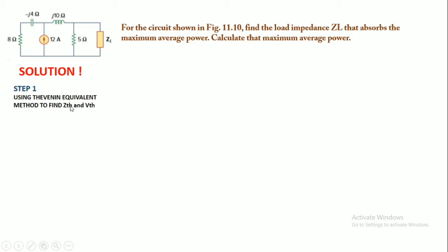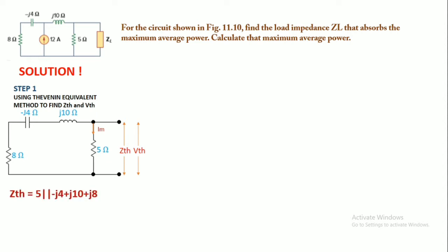First of all, we're going to remove the current source and it acts like an open circuit. So this is the circuit without a current source. We got the value of the Thevenin impedance Zth is 5 parallel with -j4 plus j10 plus j8. We parallel this and we get the value is j30 plus 40 divided by 13 plus j6.